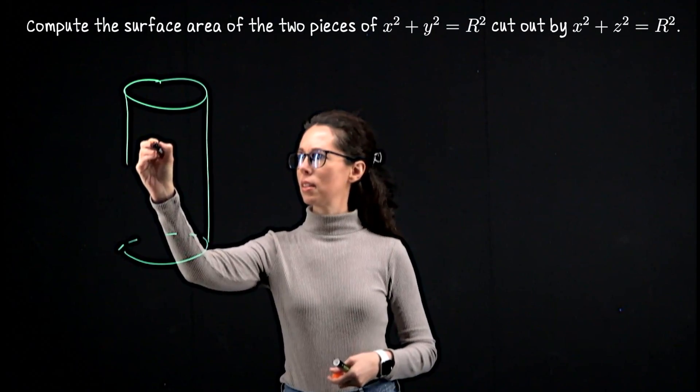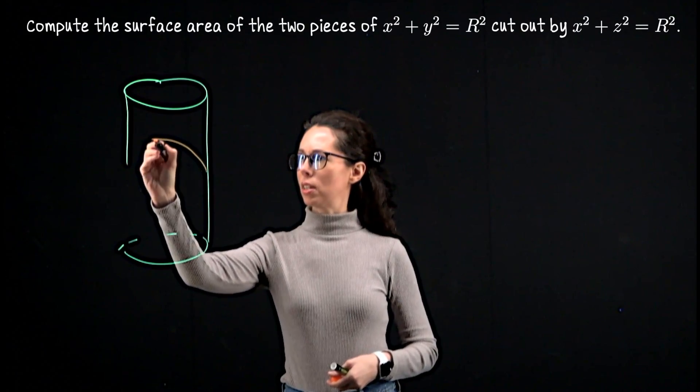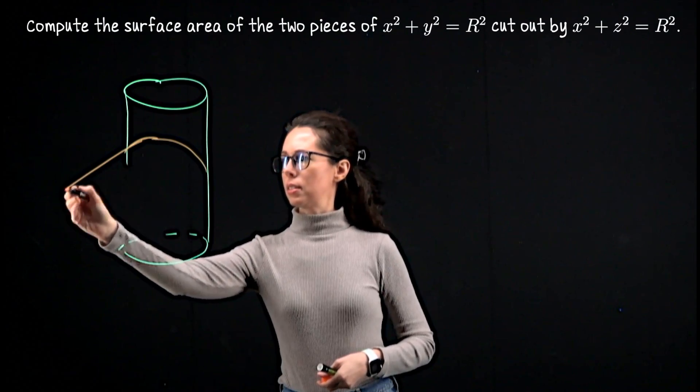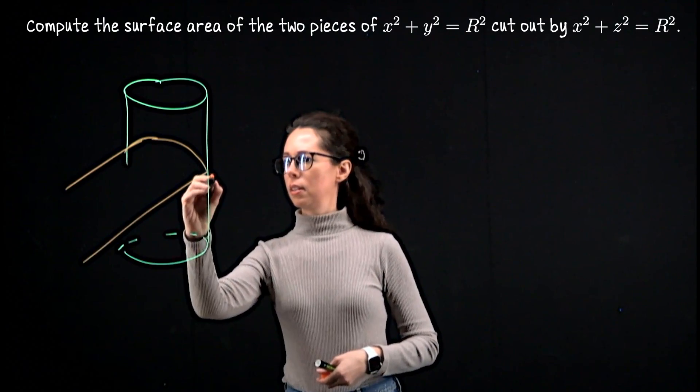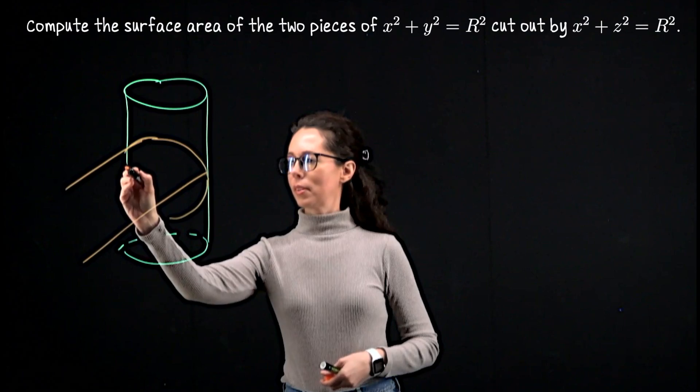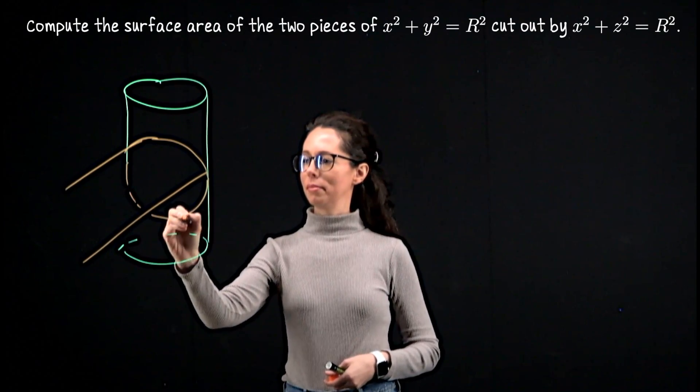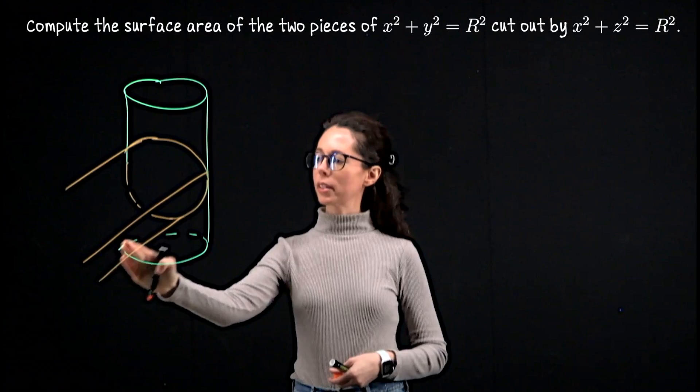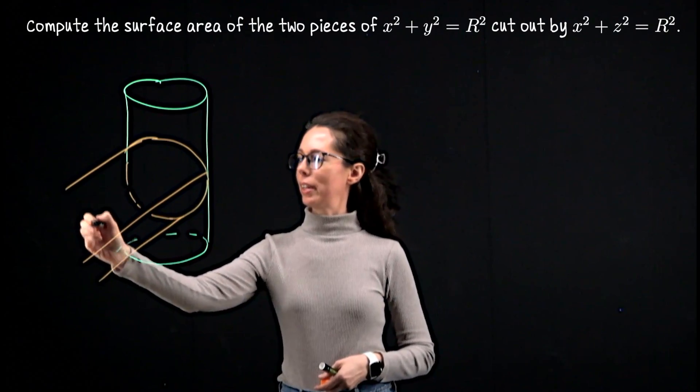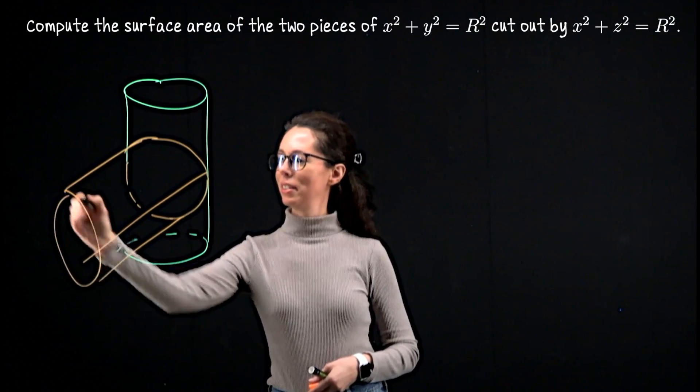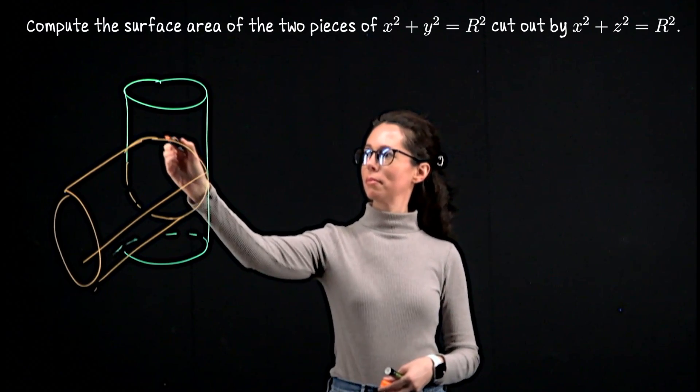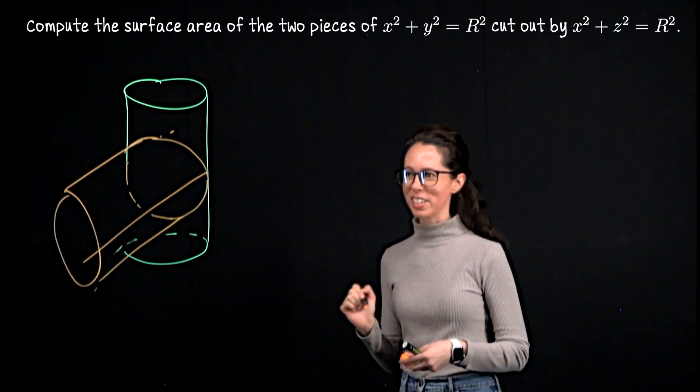So that's going to be like this. So let's see. I can imagine that this cylinder. Okay. All right. That looks kind of terrible, but hopefully it communicates the idea of the two cylinders intersecting.